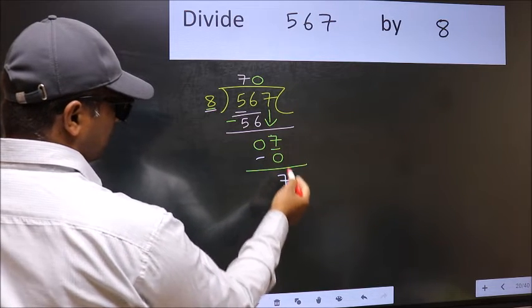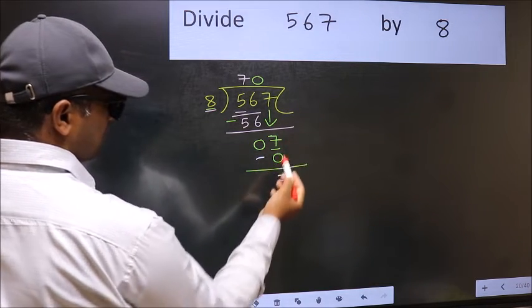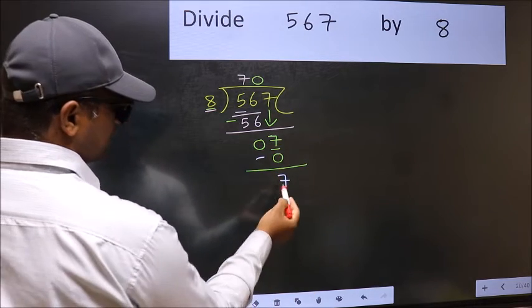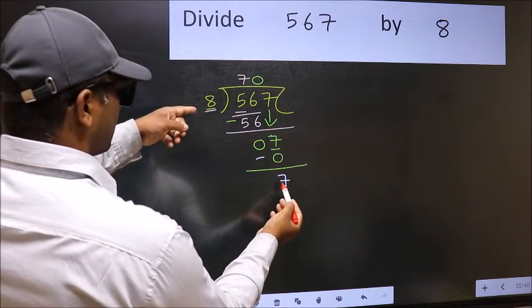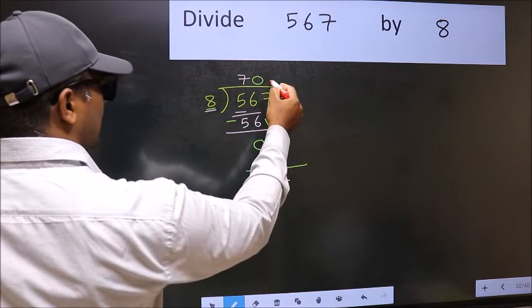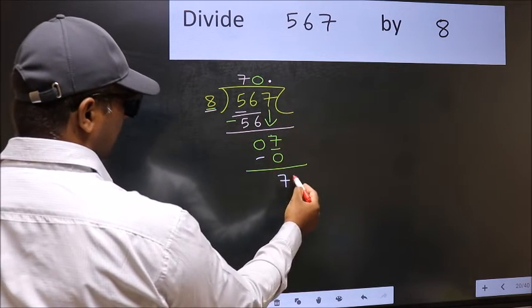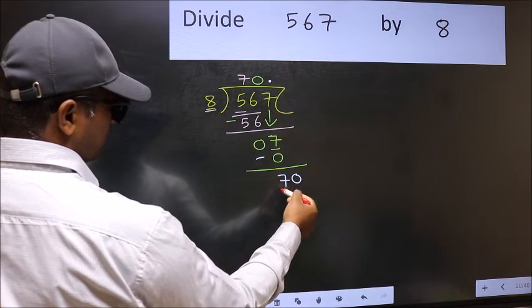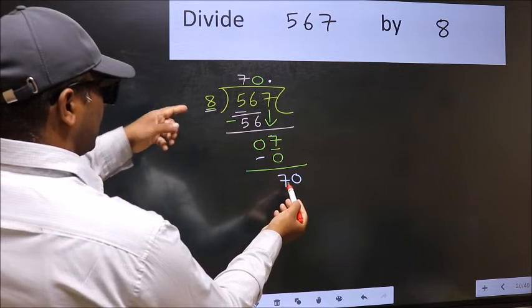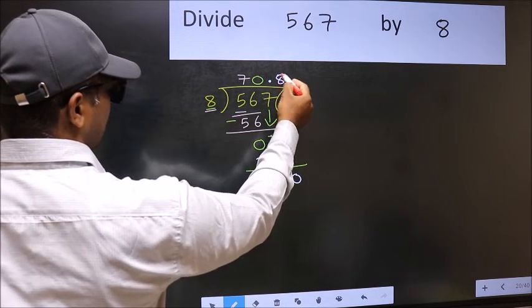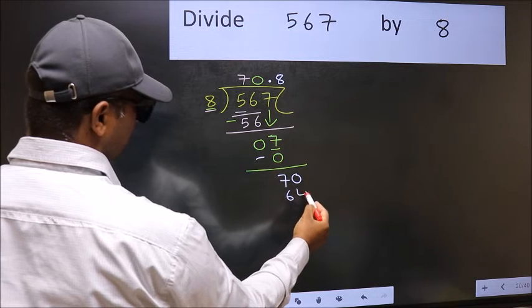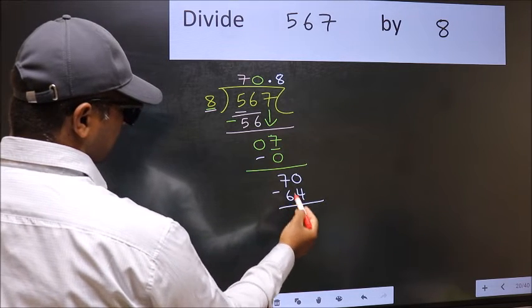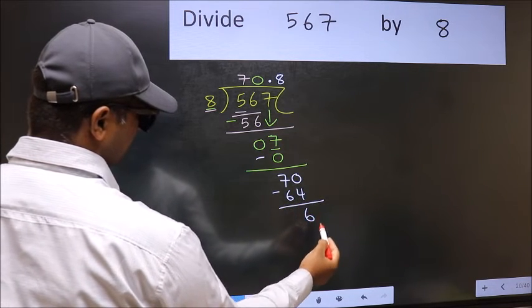Over here we did not bring any number down and 7 is smaller than 8, so now you can put dot and take zero. So 70. A number close to 70 in 8 table is 8 eights are 64. Now you should subtract, we get 6.